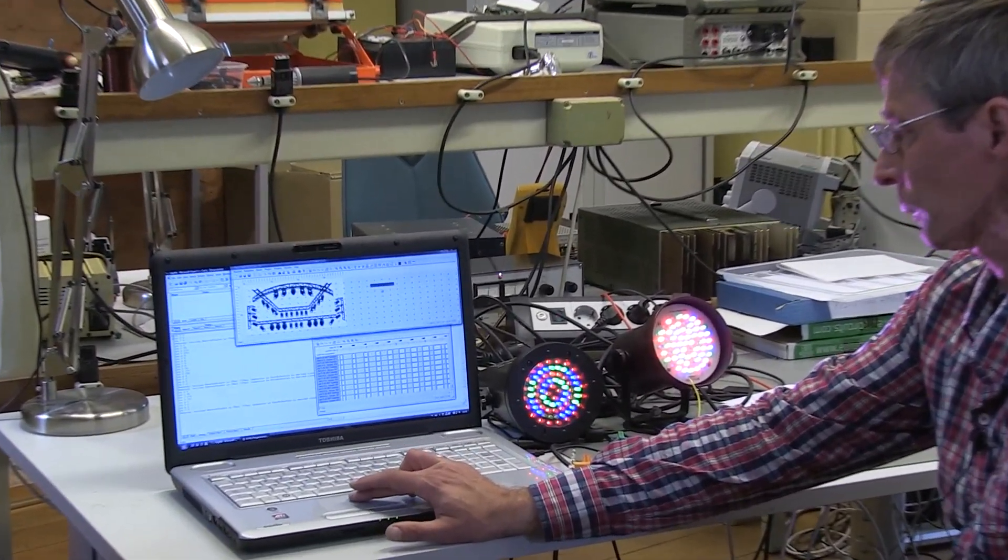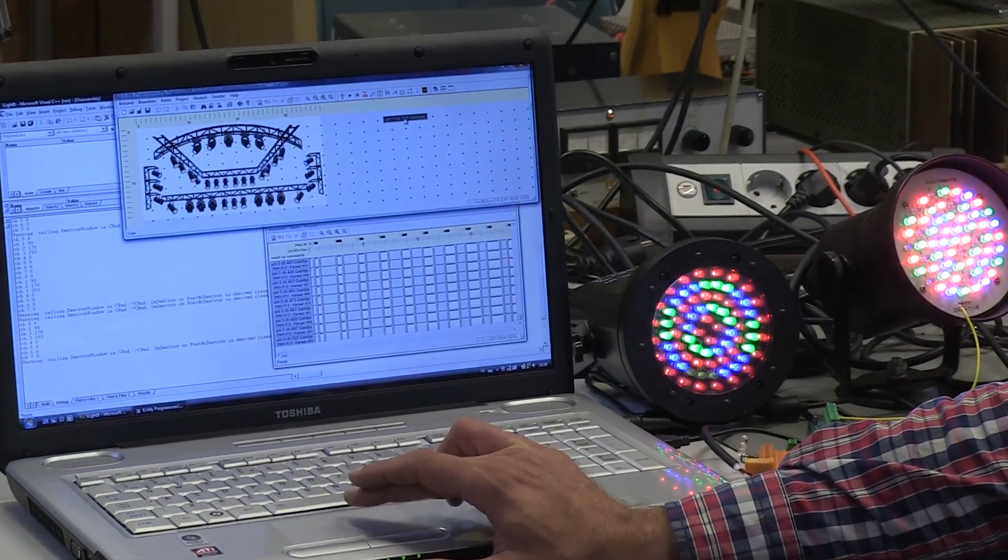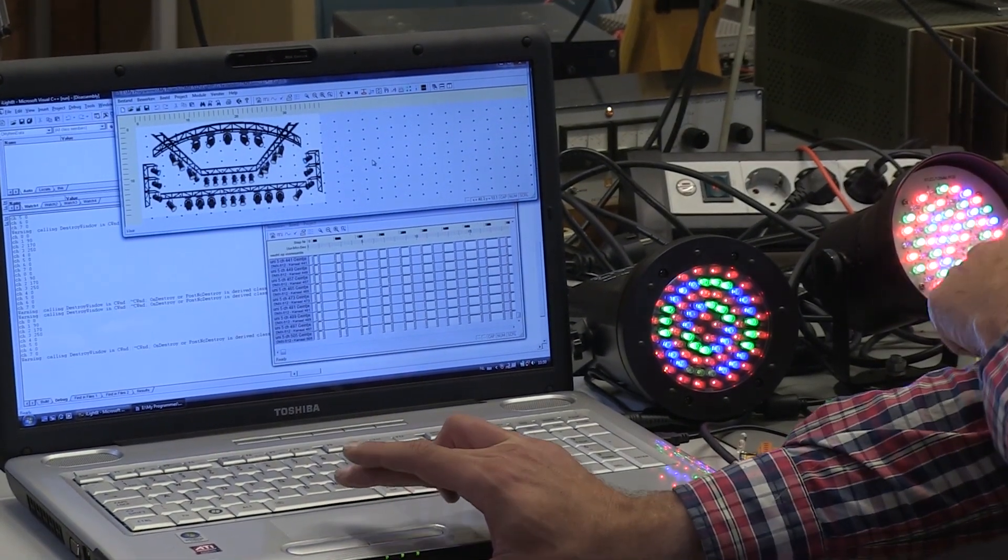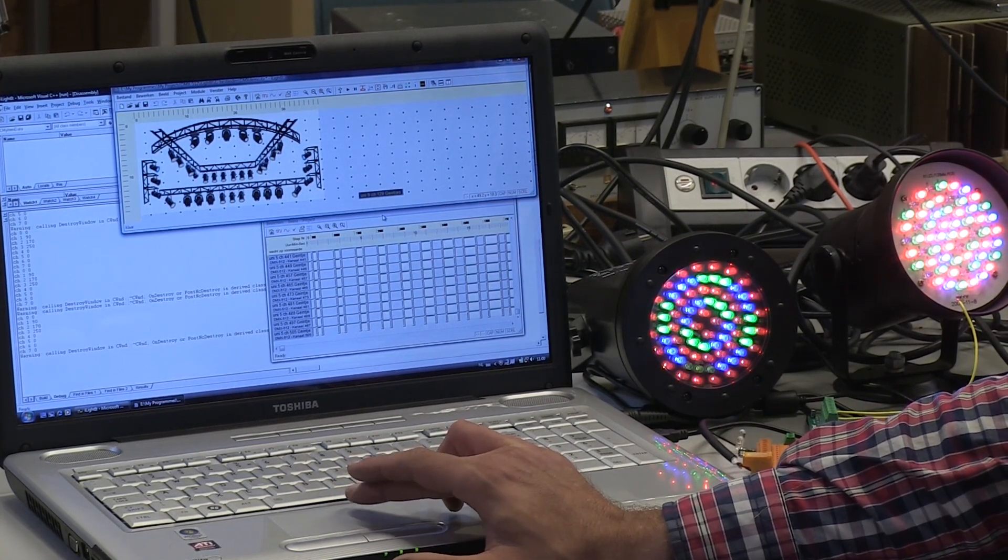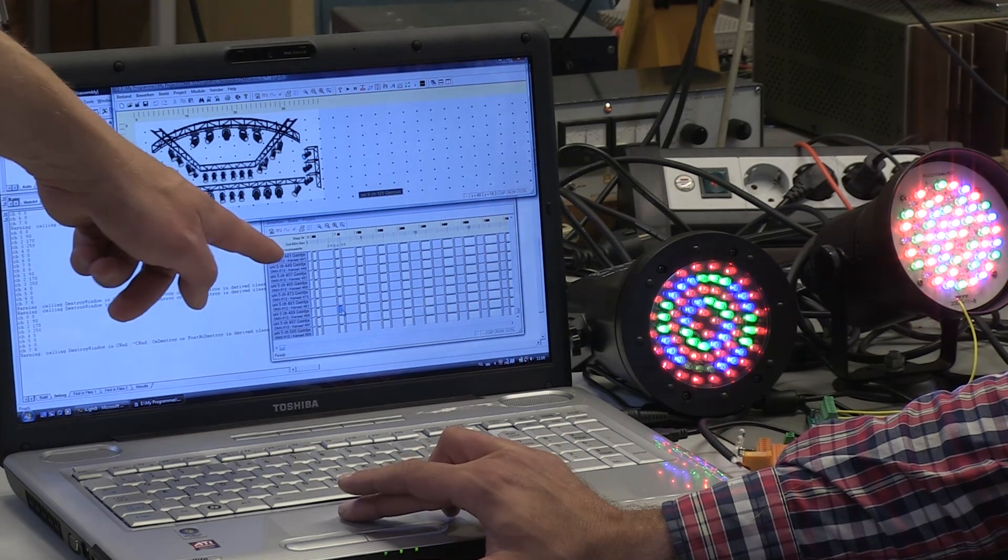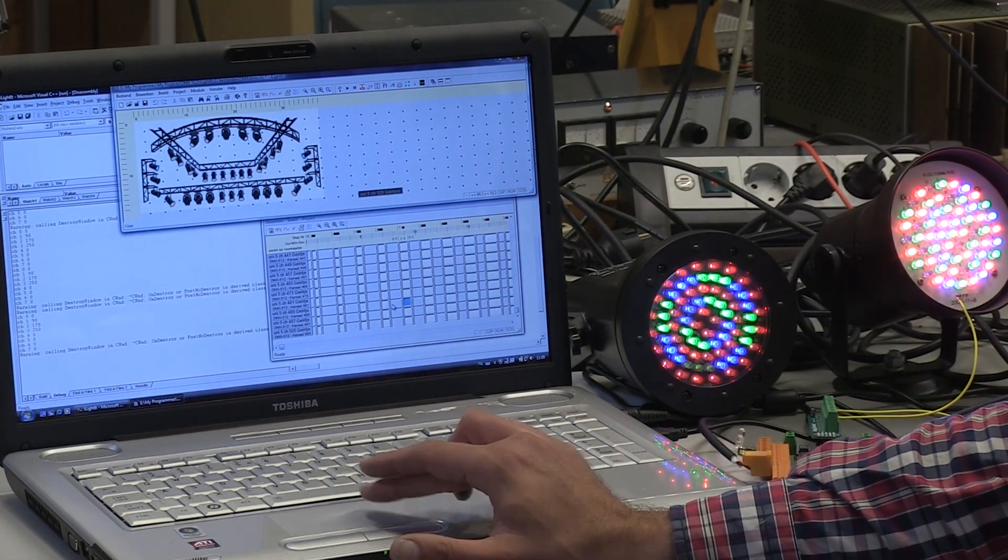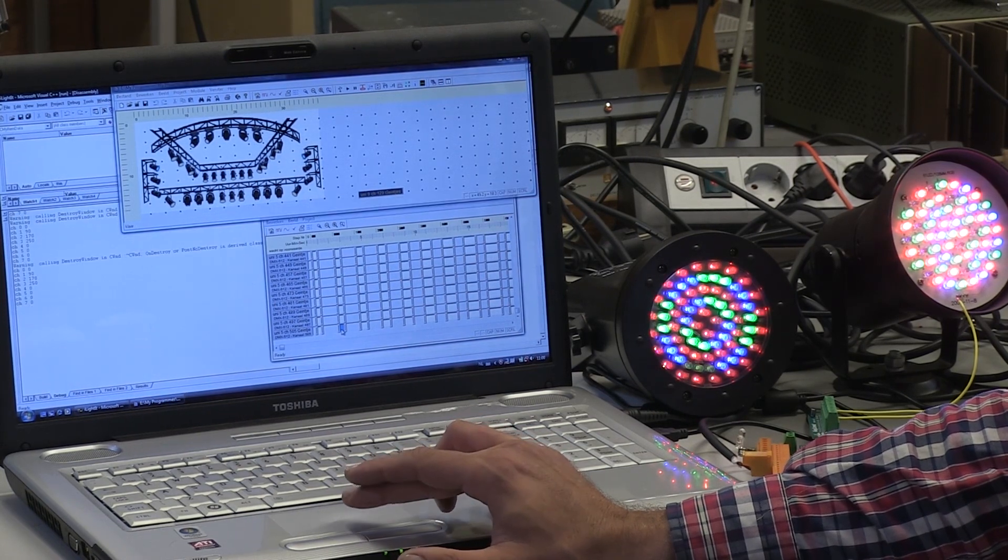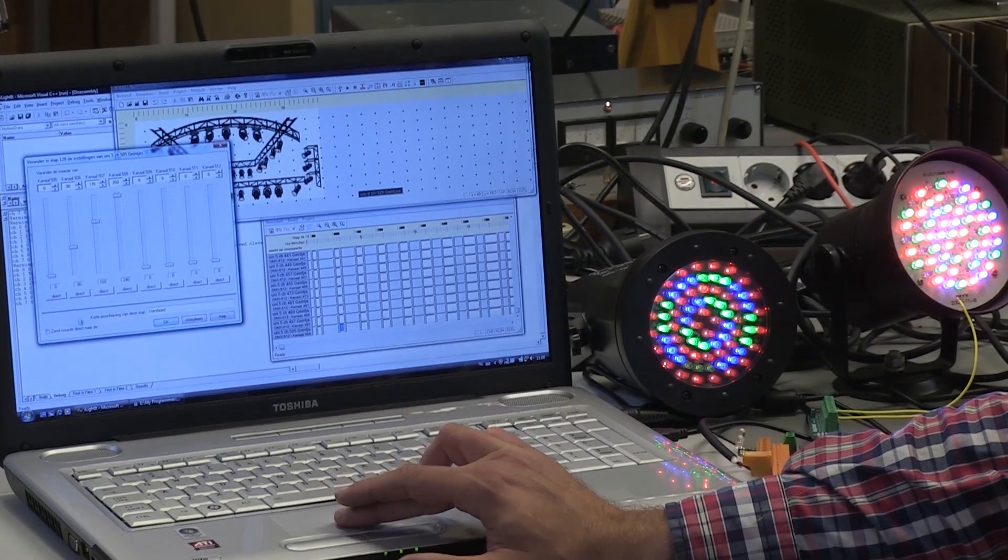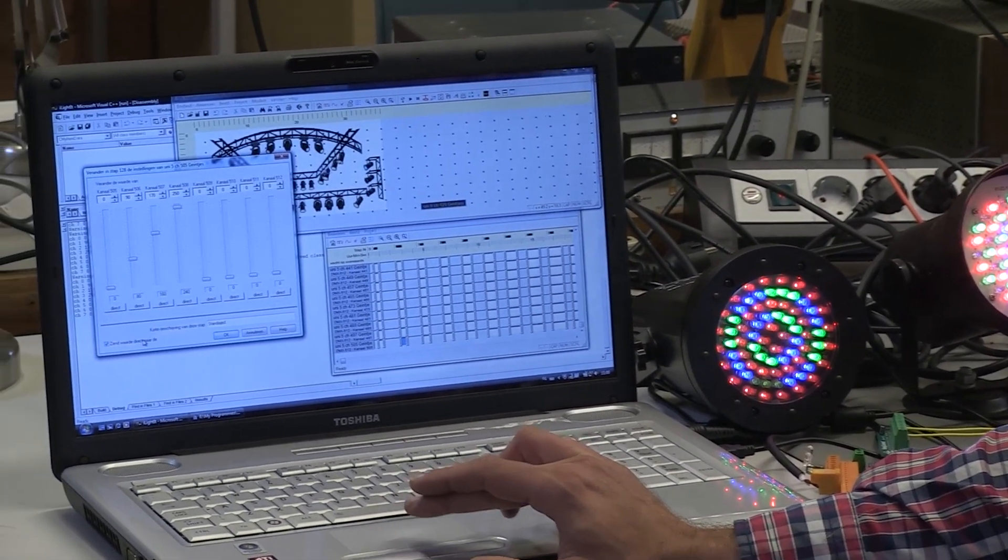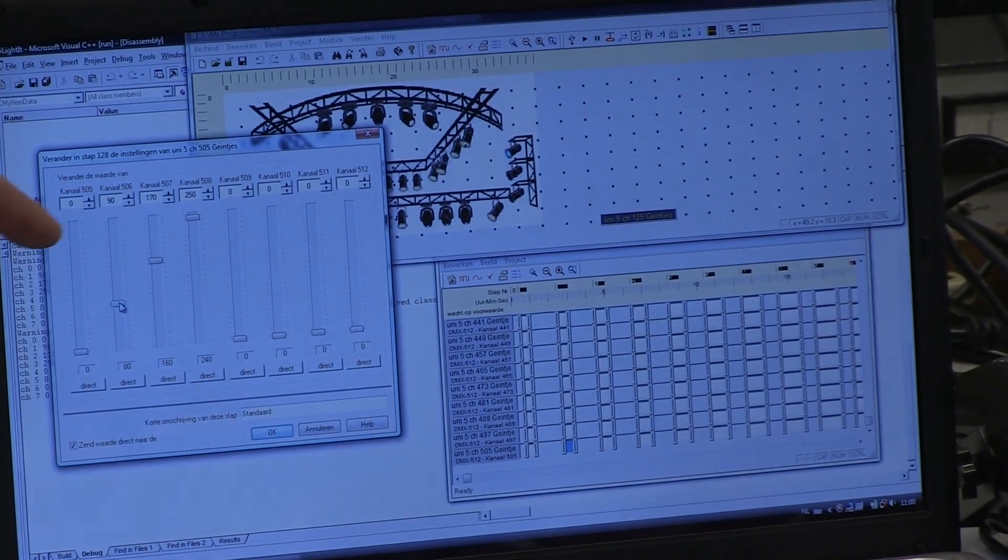As you can see here I have made a demonstration program. All the universes are present. I have connected these two fixtures on universe number five so I have opened universe number five. That's this window. If you click on the right channel then it pops up. And then you can here change the channels. You have to click this on and then it's actually sending the information to the fixture.